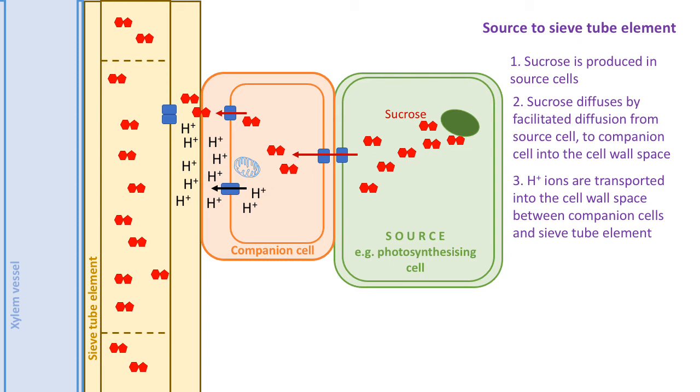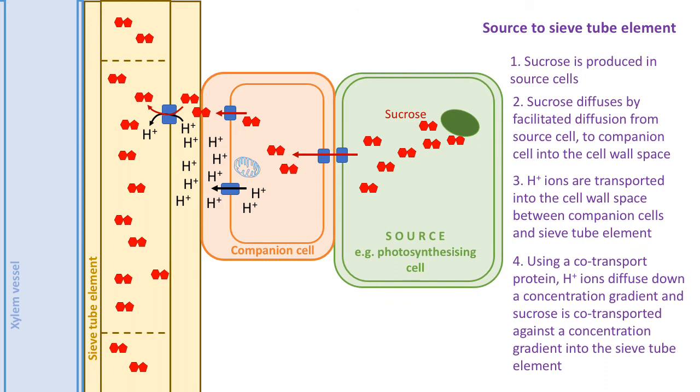Now we have sucrose in that cell wall space and a high concentration of hydrogen ions. The next step: those hydrogen ions then move down a concentration gradient through a co-transporter, and sucrose is co-transported in that process against its concentration gradient into the sieve tube element.